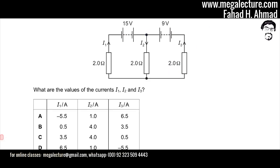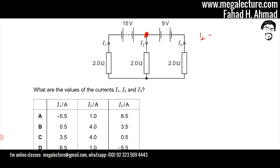The first thing I'm going to do is focus on this node over here. What you'll notice is that current i2 is leaving that node, current i1 is entering that node, and current i3 is also entering the node. So the current leaving is i2, and the currents entering are i1 and i3, giving us our first equation: i1 plus i3 is equal to i2.